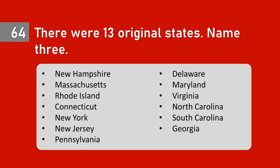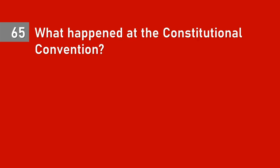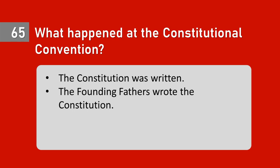Question 64: There were 13 original states. Name three. Question 65: What happened at the Constitutional Convention? The Constitution was written; the Founding Fathers wrote the Constitution.